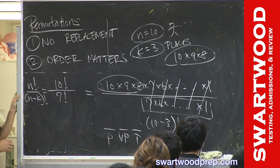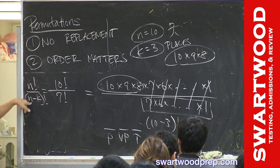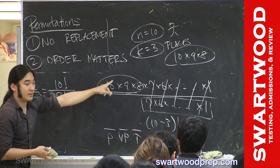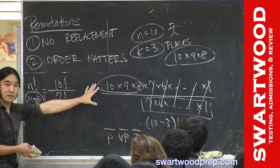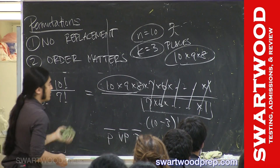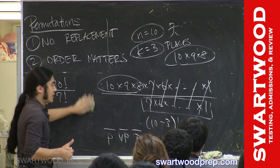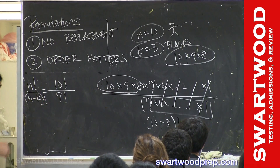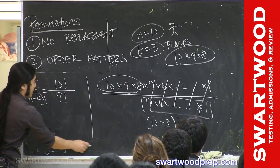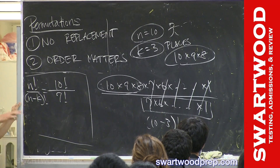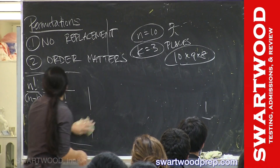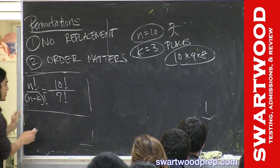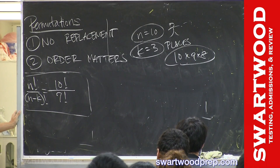I personally never use this formula — I always work it out the direct way. I'm not doing this to torture you; we need it for combinations. But does everybody see what we did? That's a permutation. Now the question is, do we want to do a problem? Actually, let's do one.